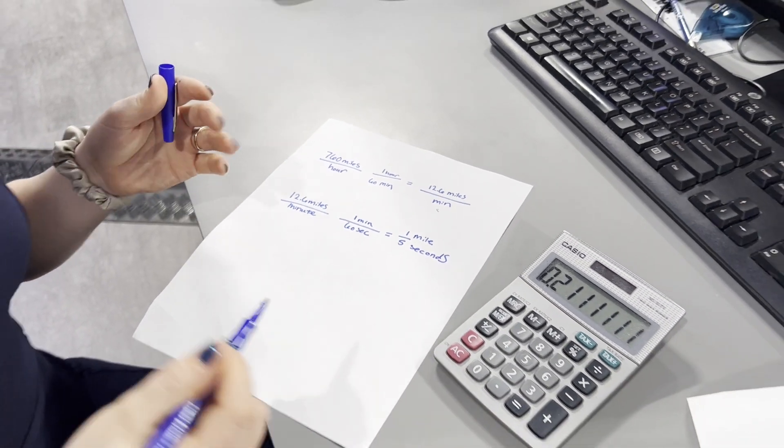Easy. One mile every five seconds. So if you see a flash and you start counting, one, two, three, four, five seconds, that means that there's one mile between you and the storm.